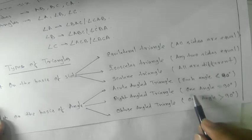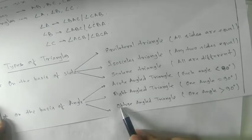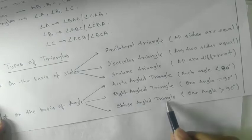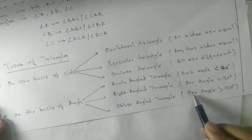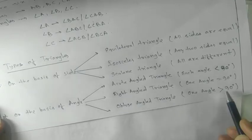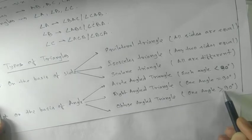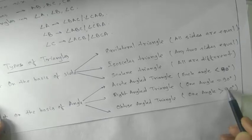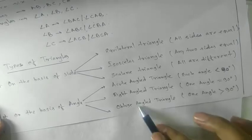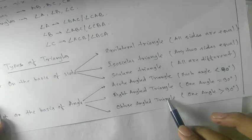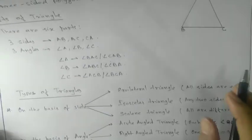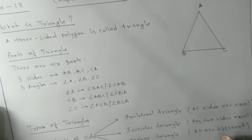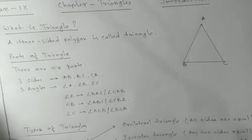Similarly, obtuse angle triangle means only one angle should be greater than 90 degrees. That type of triangle is called an obtuse angle triangle. So this was your introduction.